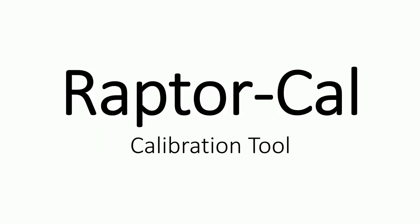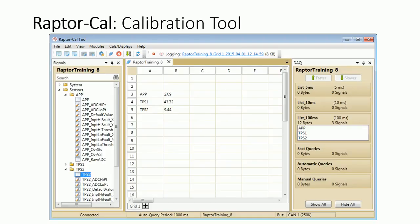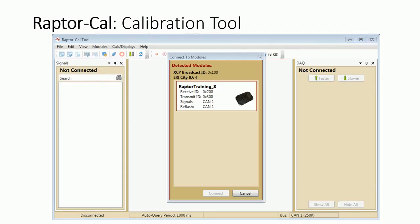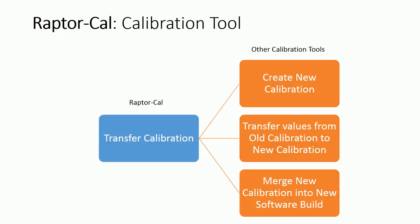Raptor Cal allows developers to program, calibrate, or create displays for their control module. Raptor Cal users will likely appreciate a number of useful features built into the program, including an integrated data acquisition feature, or the ability to scan a given CAN bus and report all of the detected modules. Perhaps the most dramatic improvement over popular calibration tools currently on the market is the simplified calibration management workflow. Users can create a new calibration file, transfer values to that file, and merge it into a new software build, all in a single step.